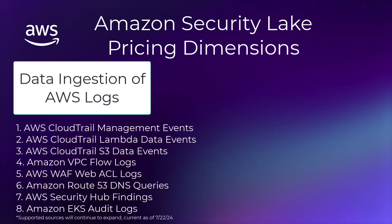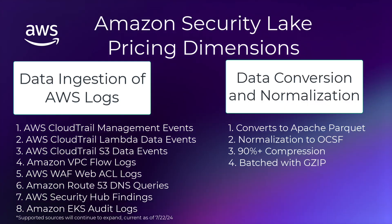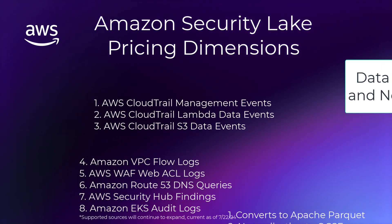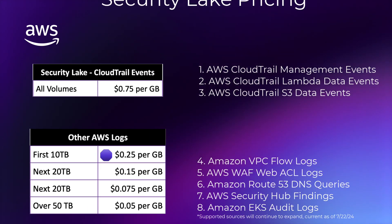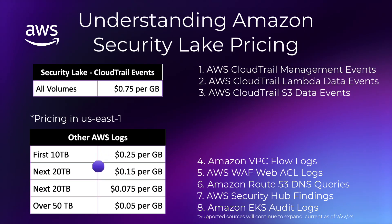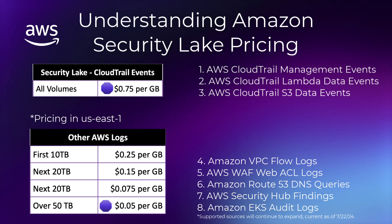The first is the volume of AWS data ingested, and the second is a flat fee for converting and batching objects into Apache Parquet. For most AWS sources, this is a regressive tiered pricing model that starts at $0.25 per gigabyte and reduces to $0.05 per gigabyte as more data is ingested. The only exception today is CloudTrail logs — management and S3 data events — at $0.75 per gigabyte.